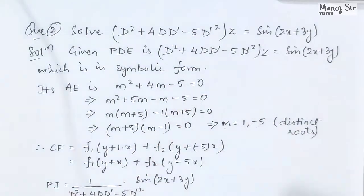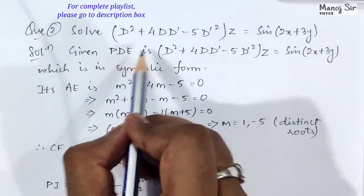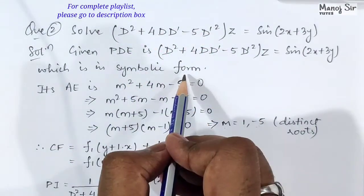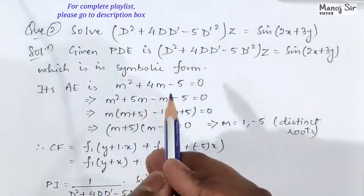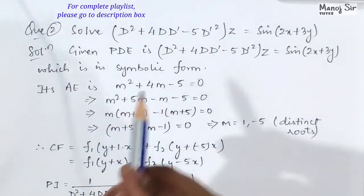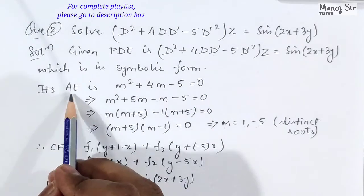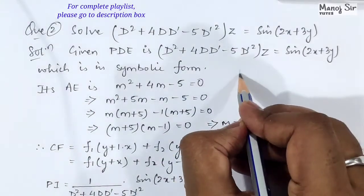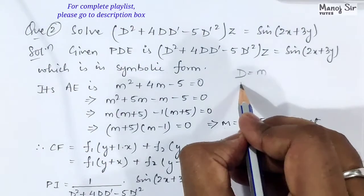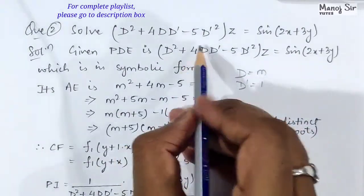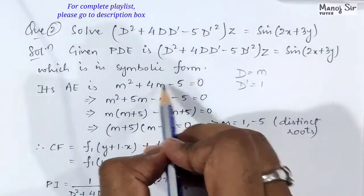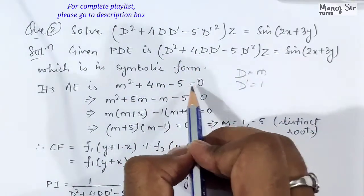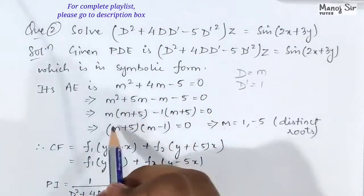The given partial differential equation is already in symbolic form, so we will use it directly. Our first target is to find the complementary function (CF), and for that we need to find the auxiliary equation. To get the auxiliary equation, put D = m and D' = 1, giving us: m² + 4m - 5 = 0.